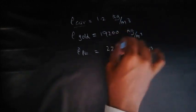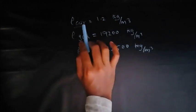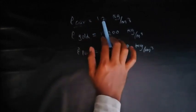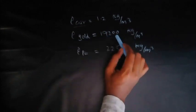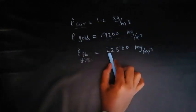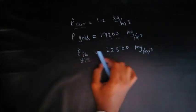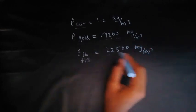The density of air, if you want you can remember this value, otherwise no problem—they will be giving these values in problems. Density of air is 1.2 kg per meter cube. For gold, the density value is 19,200. For platinum, it's 22,500. This is the highest value of density; platinum has the highest value of density.